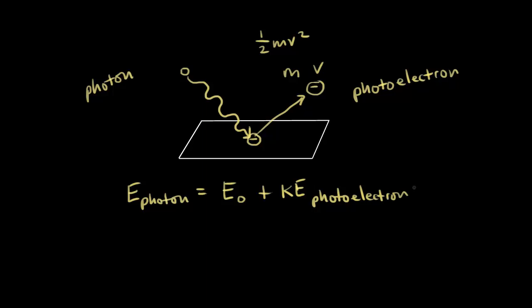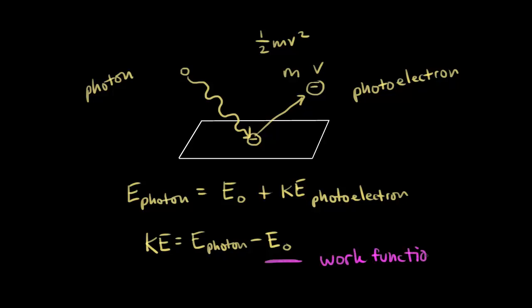If you wanted to solve for the kinetic energy of that photoelectron, it's very simple: kinetic energy equals the energy of the photon minus the energy that was necessary to free the electron from the metallic surface. This E-naught — you might see it written with a different symbol — is the work function. The work function is different for every kind of metal; it's the minimum amount of energy necessary to free the electron.